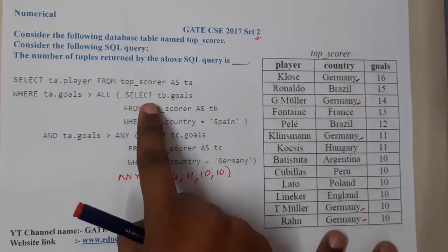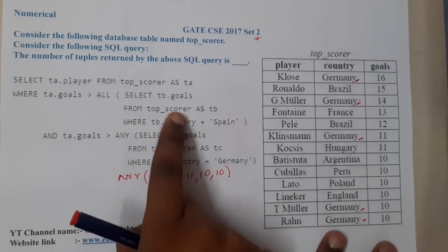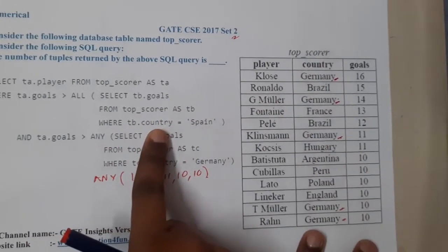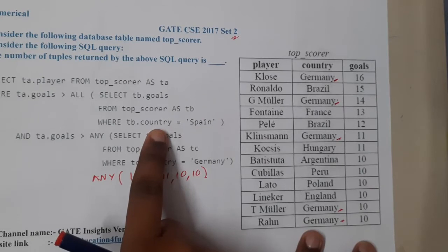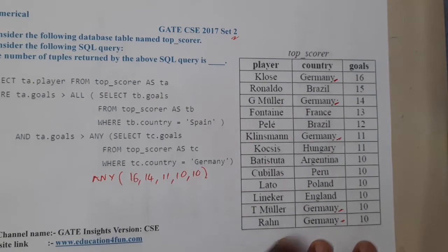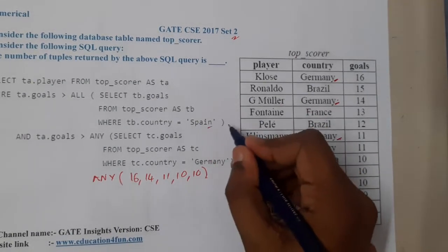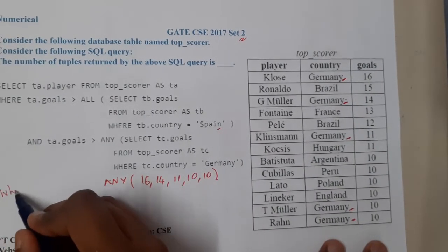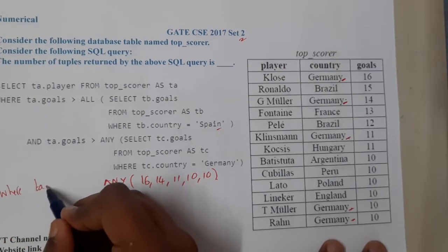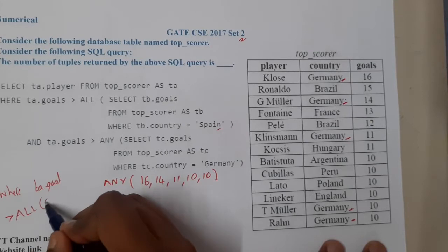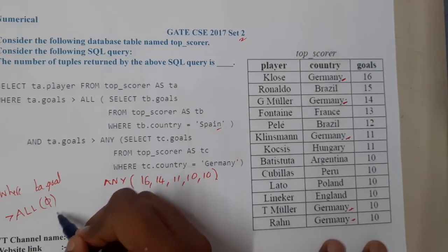Now the second inner query says: SELECT tb.goals FROM top_scorer AS tb WHERE tb.country = 'Spain'. Looking at the table, there is no Spain entry, so Spain returns an empty set — zero rows. Now, tb.goals greater than ALL of an empty set — since the set is empty, every value will be greater than all of nothing.